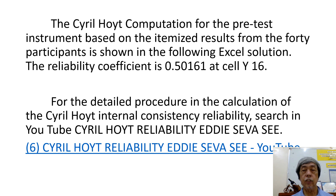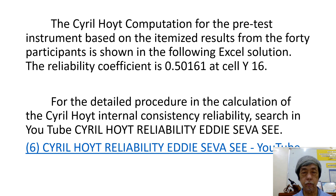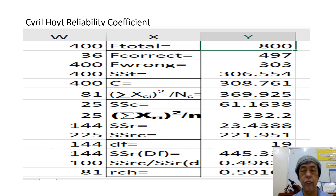The Cyril Hoyt computation for the pre-test instrument based on the itemized results from the 40 participants is shown in the following Excel solution. The reliability coefficient is 0.5061, shown at cell Y16. For the detailed procedure and calculation of the Cyril Hoyt internal consistency reliability, search in YouTube: Cyril Hoyt reliability, Eddie Seva C. This is the zoomed portion of the Excel sheet where the solution for Cyril Hoyt reliability was programmed.